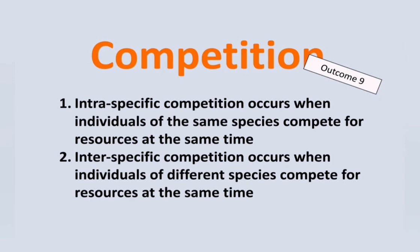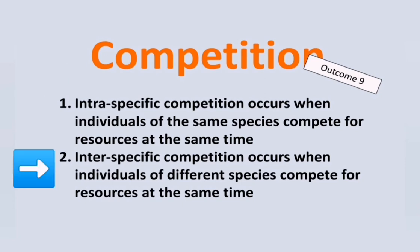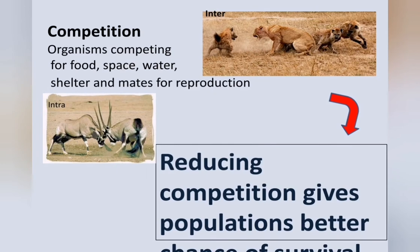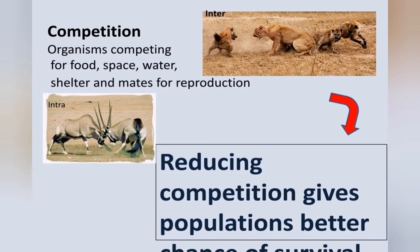Be careful not to mix up the spelling. Intraspecific competition occurs when individuals of the same species compete for resources at the same time, while interspecific competition occurs when individuals of different species compete. For example, when two bucks of the same species fight for a female, that is intraspecific competition. When a lion and a hyena fight over prey — they are different species — that is interspecific competition.